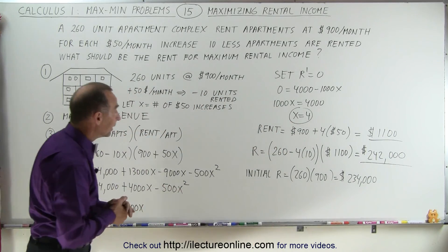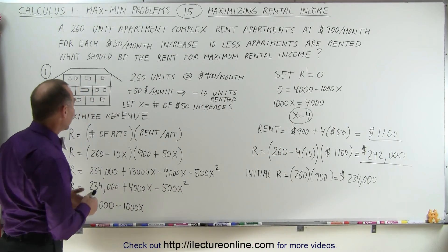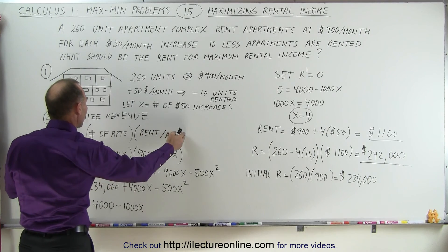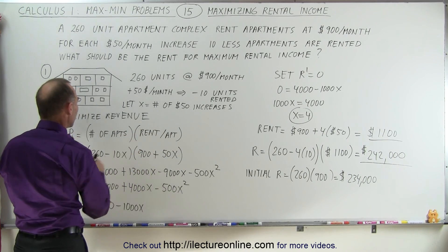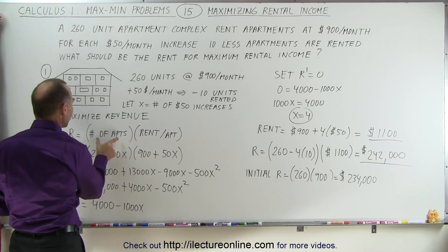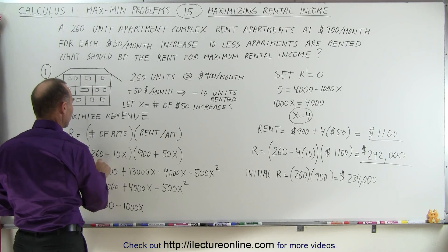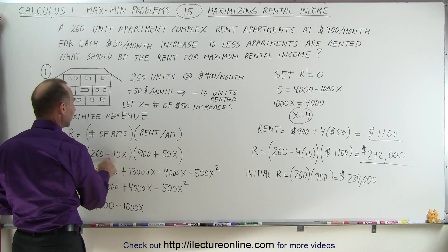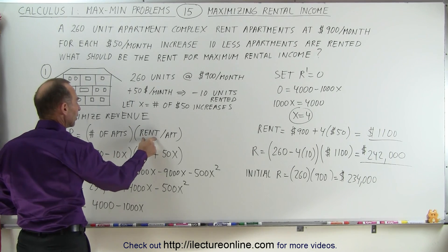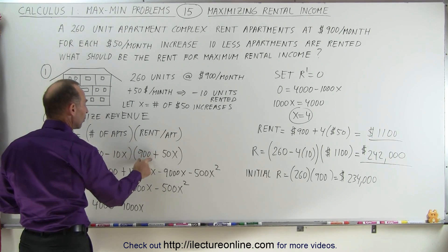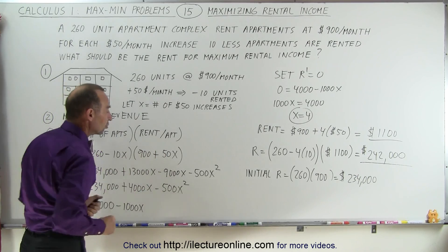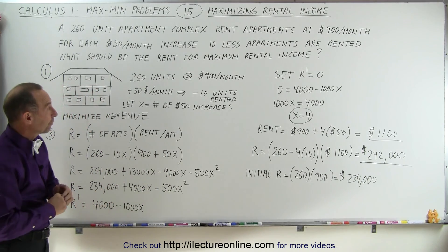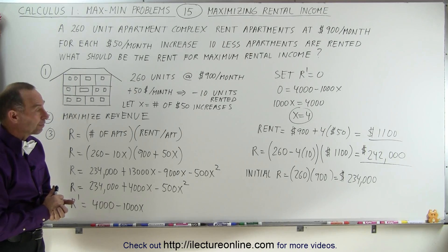In summary, the approach is to build a revenue equation expressing both the number of apartments and the rent per apartment in terms of the original values plus or minus the change. This allows us to optimize these types of rental income problems.